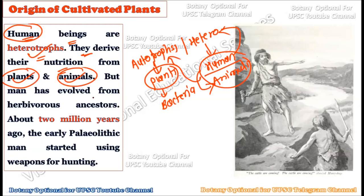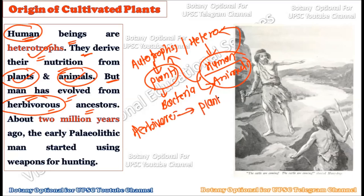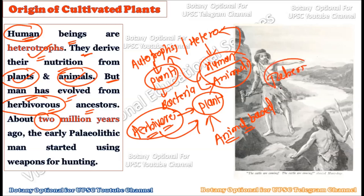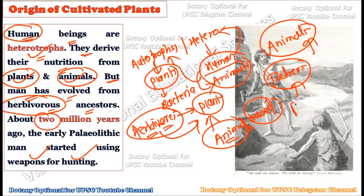Man has evolved from herbivorous ancestors — our ancestors consumed plant material only. But somewhere in evolution, we turned to animal-based food as well. Earlier, our ancestors were taking tubers from the ground and living on plant-based food. Later, we started using animal food as well, and for that we invented weapons for hunting and started regularly consuming animals.